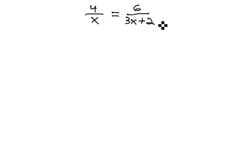We know in proportions, we multiply the diagonals or the cross product. As we do, we must remember that the denominator 3x plus 2 must be in parentheses, showing we're multiplying the 4 by the entire denominator, not just part of it.